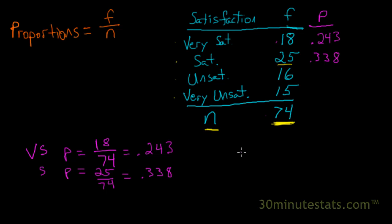And we could calculate the proportion for the unsatisfied group, which would be their frequency, 16, divided by the sample size, which is 74. And that would give us a proportion of 0.216.